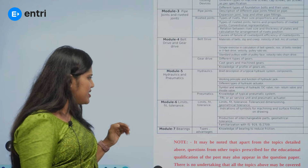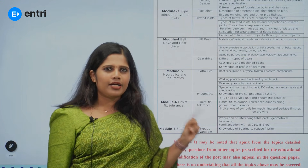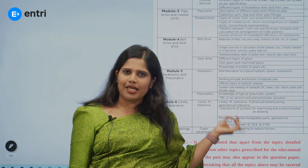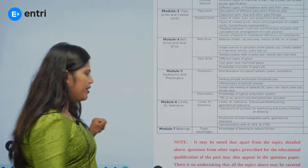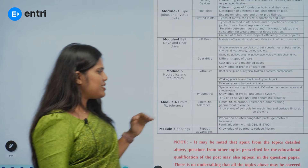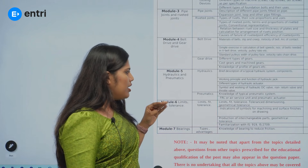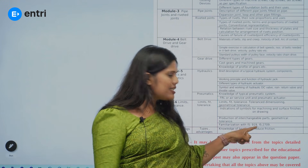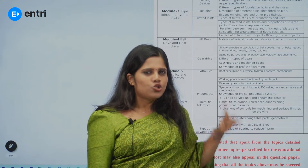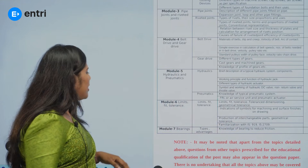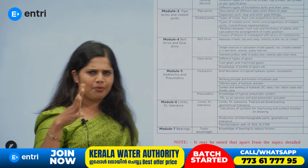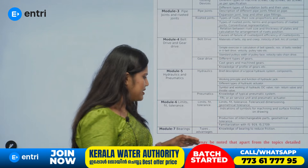The last module is Limits, Fits and Tolerance. It is very important to check for the Water Authority exam. The base references are IS-916 and IS-2709. Check the NIMI base. Then bearings — types and advantages — carry 4 marks. Bearings are simple theory basics.